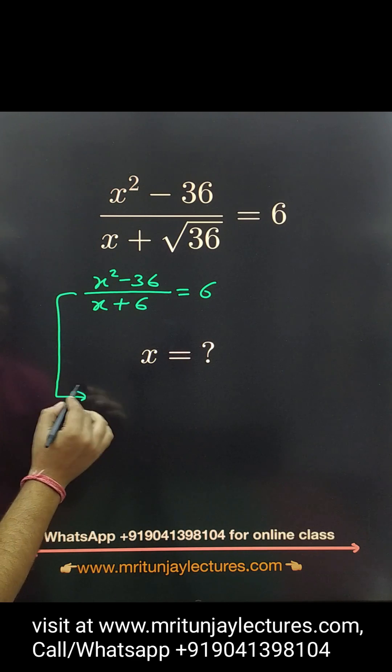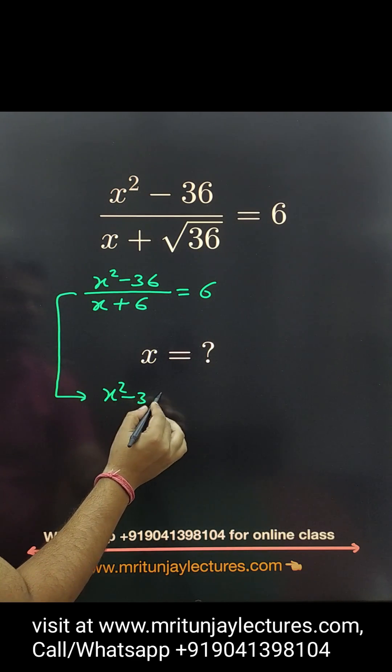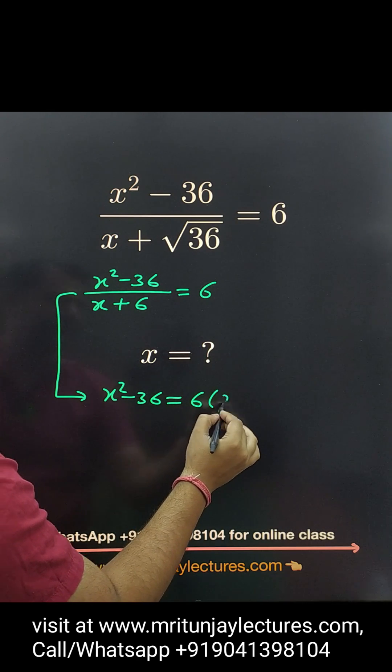After that, look here. x² - 36, this is equal to 6 times (x + 6).